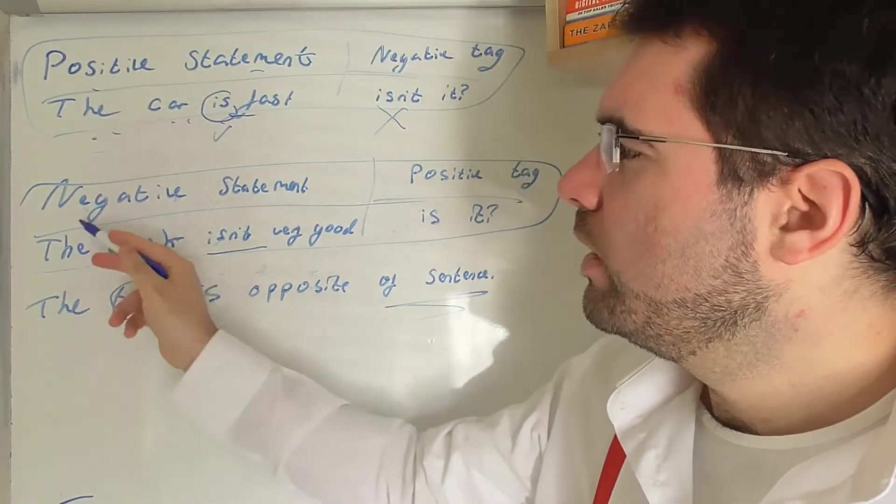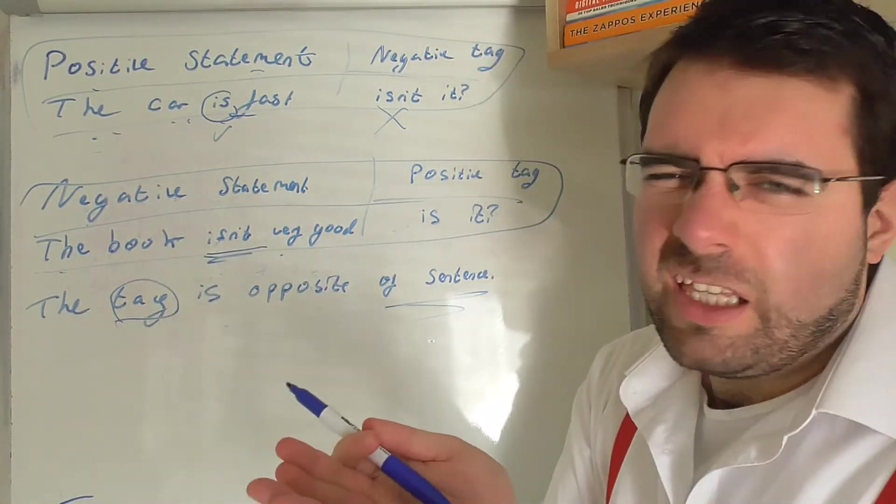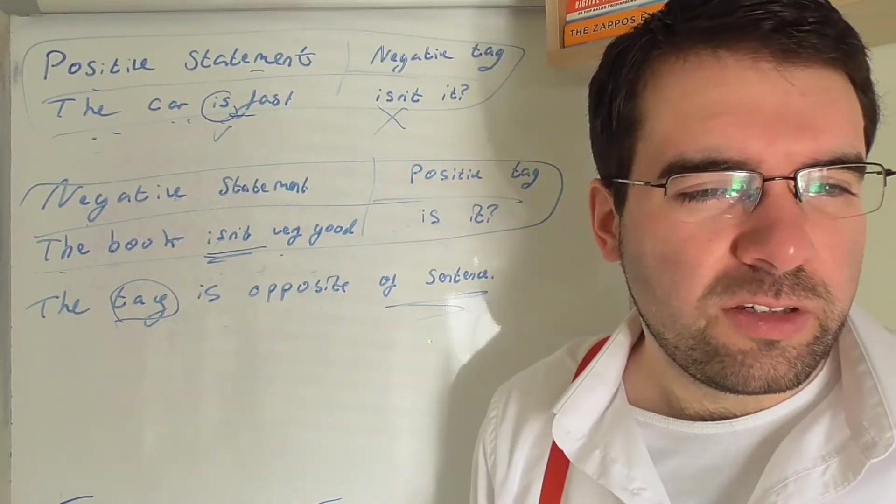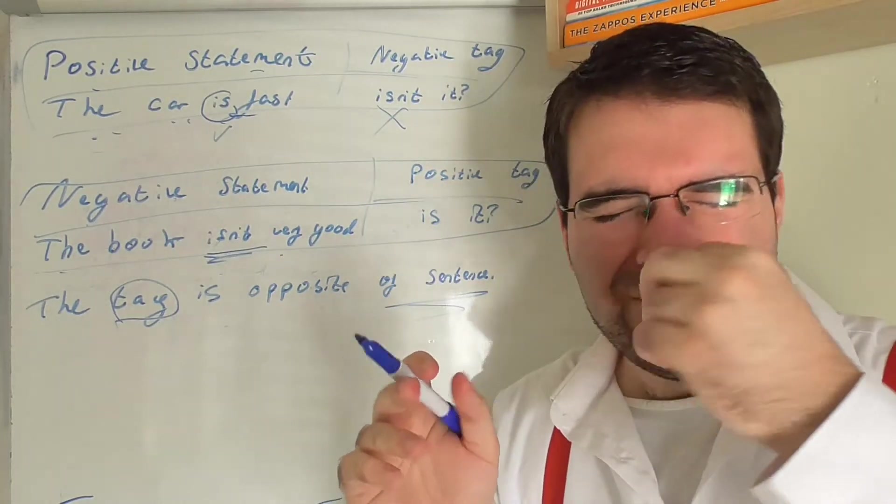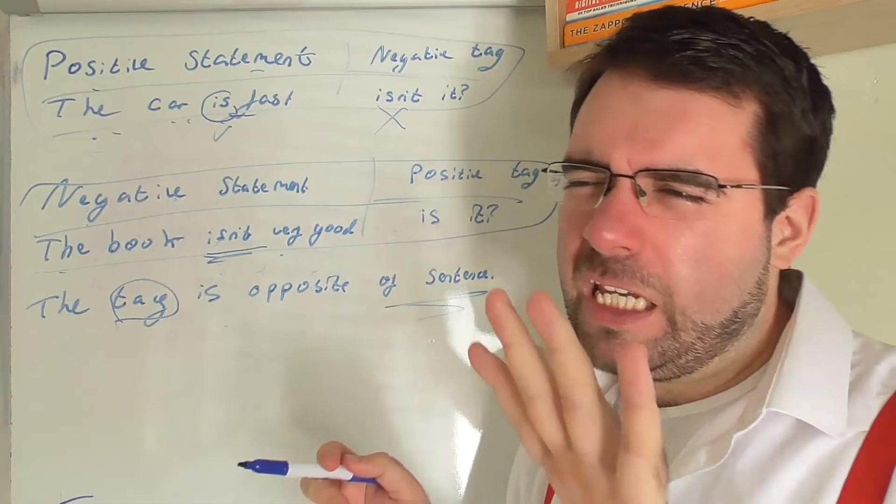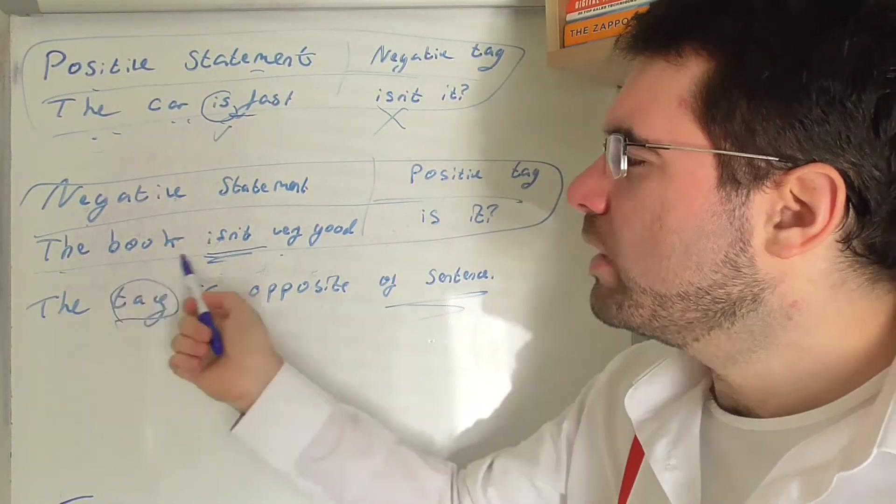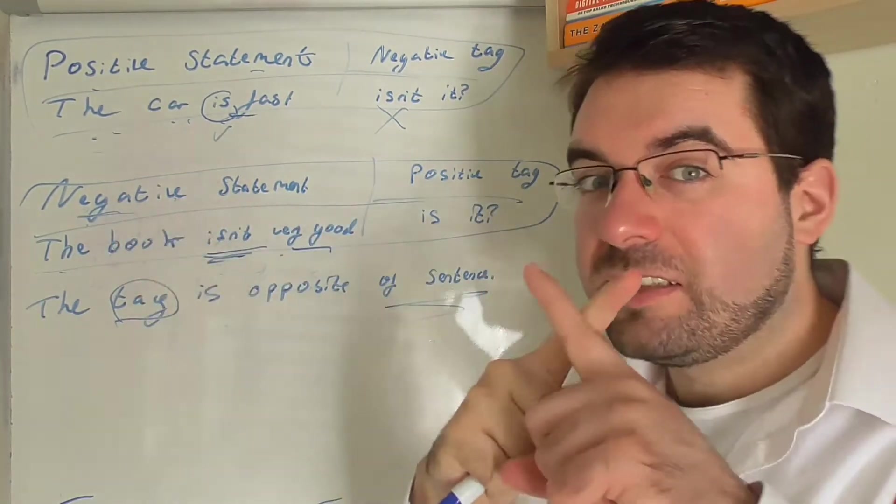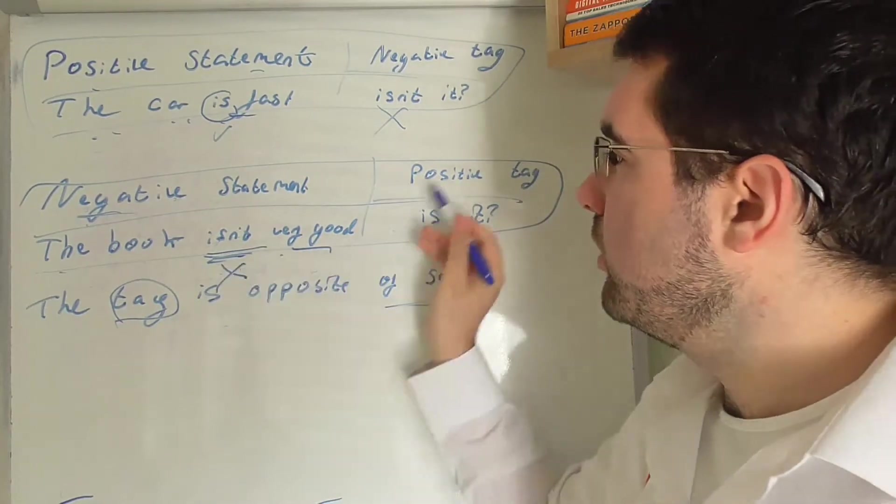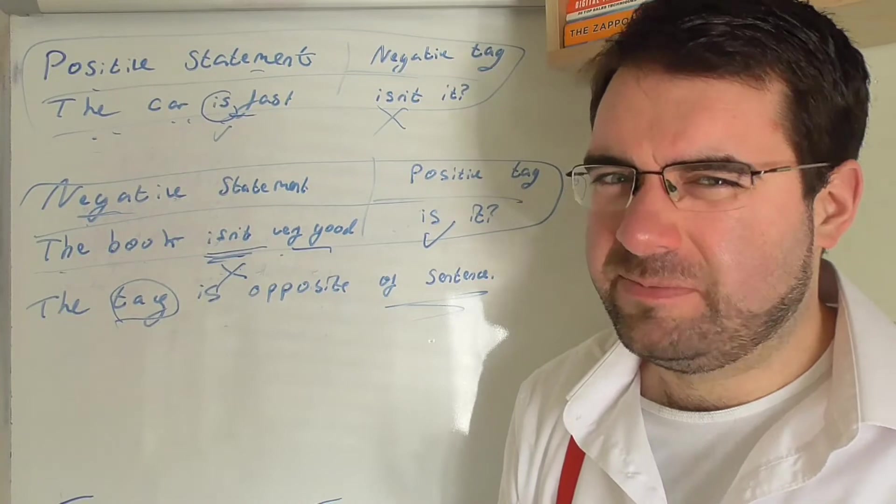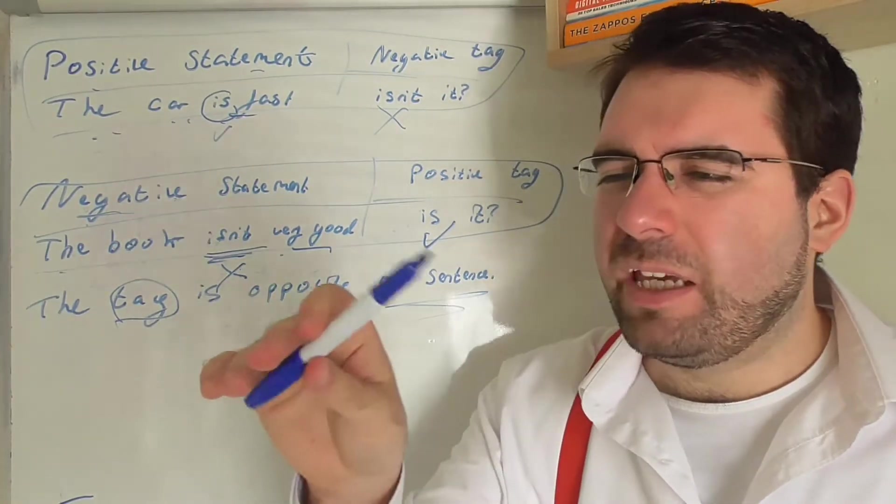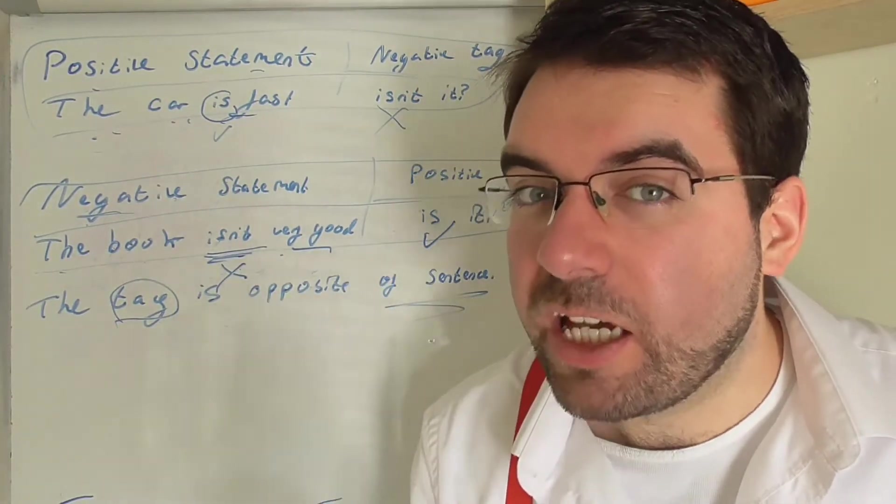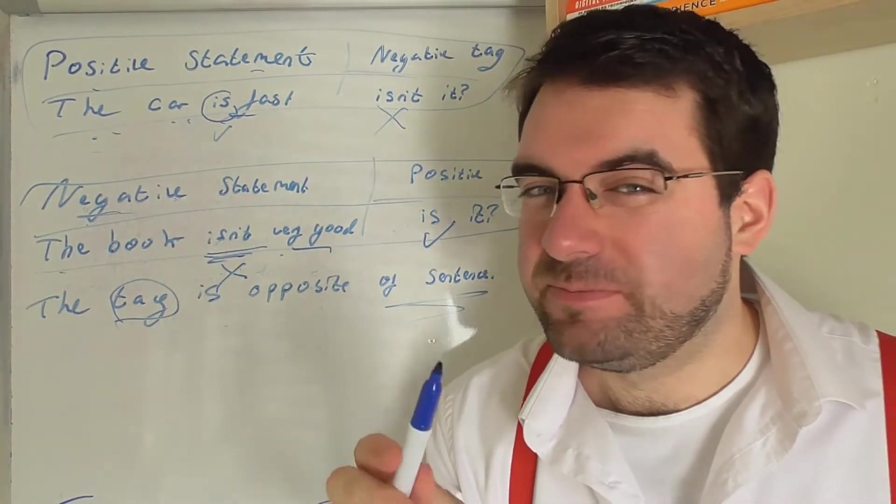But then let's look at the negative. Negative statement. The book isn't very good. It's not very good. The sun isn't very hot today. It isn't very loud today. The book isn't very good. Positive tag. So a negative statement, negative isn't, but the positive tag is. The book isn't very good, is it? No. These pens aren't very useful, are they? No. These pens don't have much ink in them, do they? No.